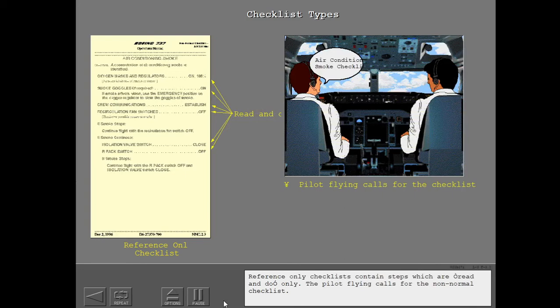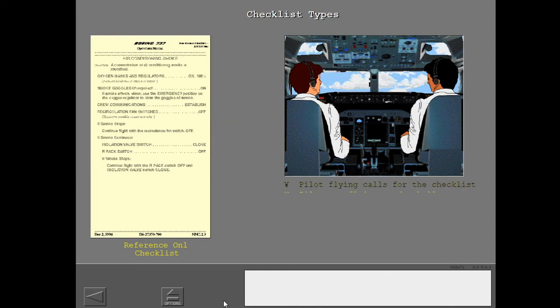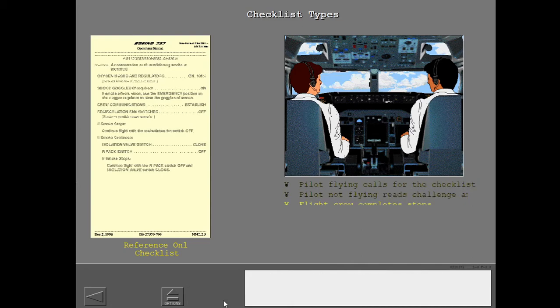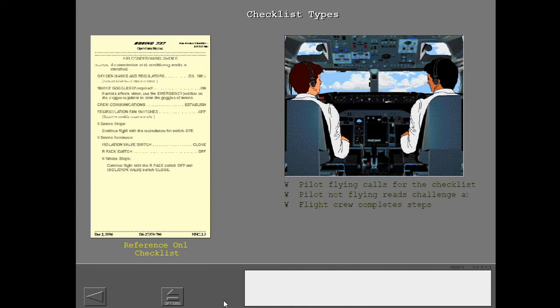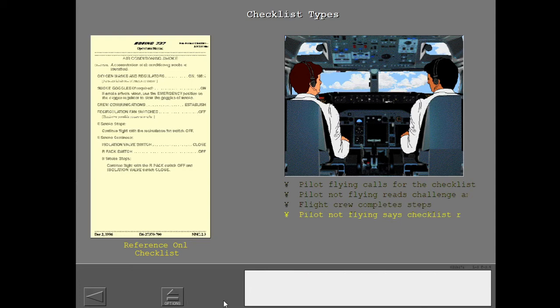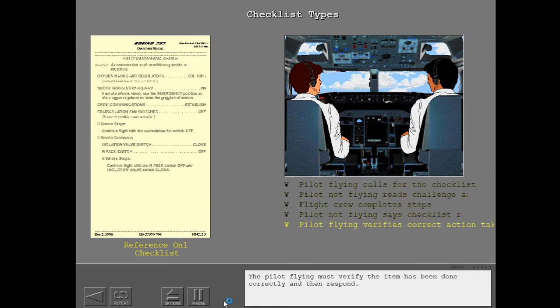Reference-only checklists contain steps which are read and do only. The pilot flying calls for the non-normal checklist. The pilot not flying reads the checklist challenge and response. The flight crew completes the necessary steps. After a checklist item is accomplished, the pilot not flying says the checklist response. The pilot flying must verify the item has been done correctly and then respond.